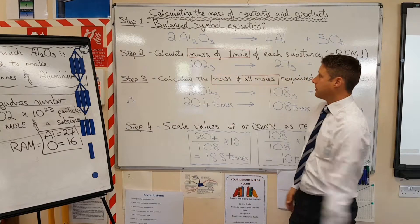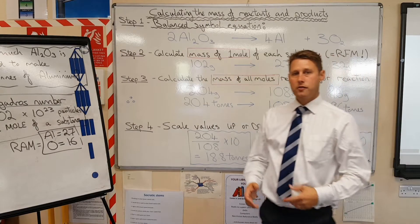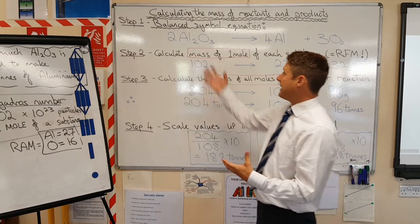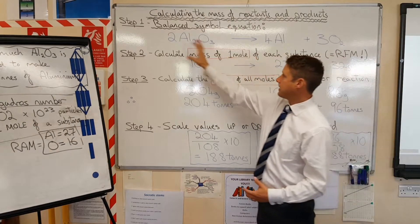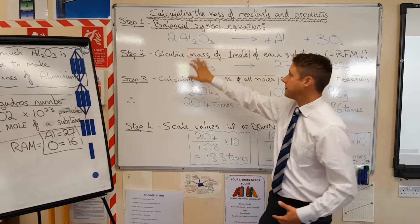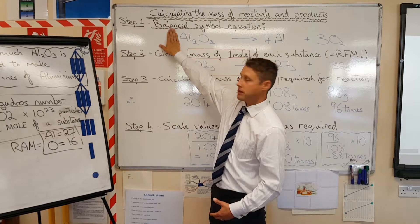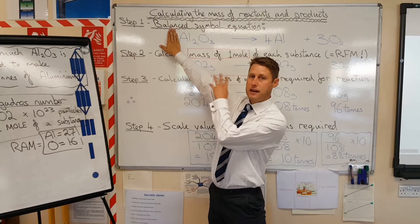We then need step two. We need to find out the mass of the formula for each of the chemicals involved, the reactants and the products. So on the left hand side, we're going to look at our aluminum oxide first. We're going to ignore the two at the front here and just look at the relative formula mass.